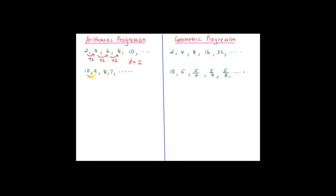For the next one, you minus 1 from the previous term. This is also an arithmetic progression with the common difference equal to negative 1.